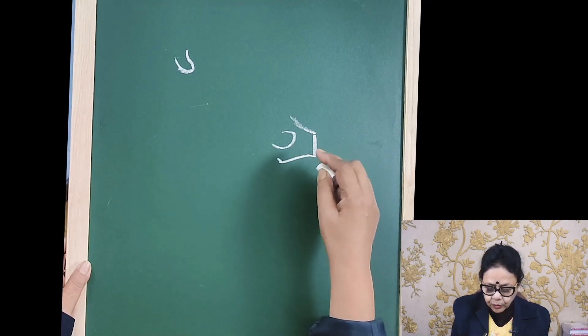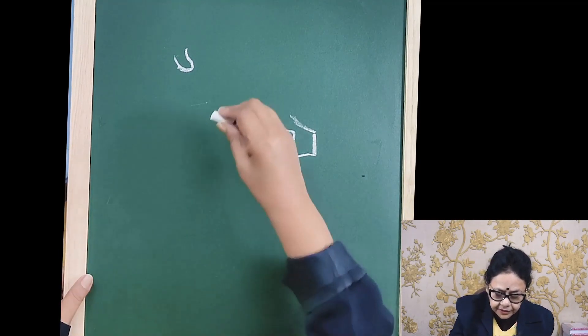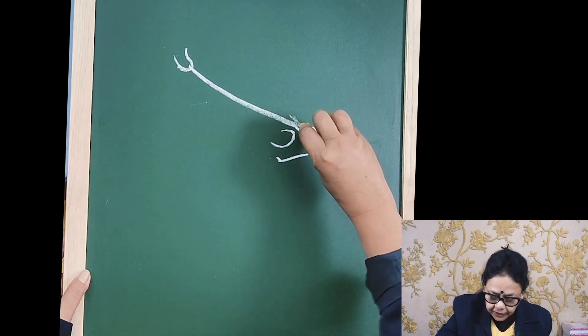This is the opening of the obturator foramen. Those two are connected by ligament which is known as the inguinal ligament.